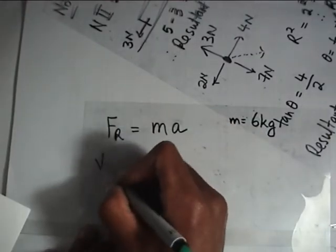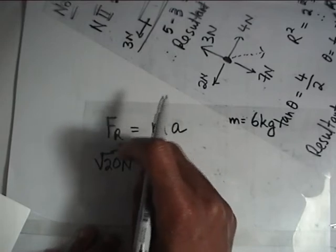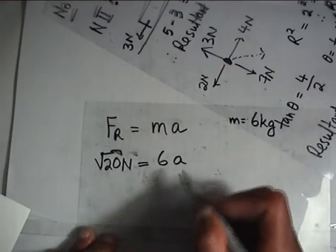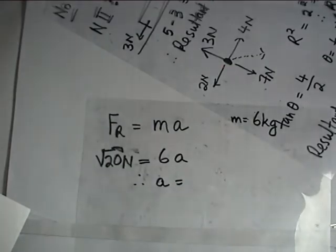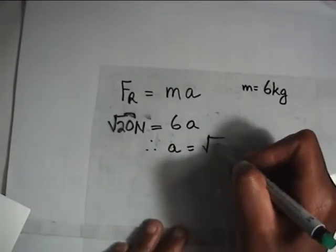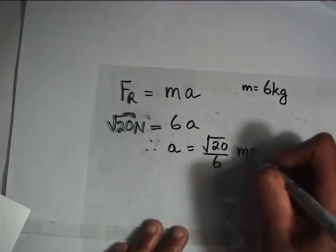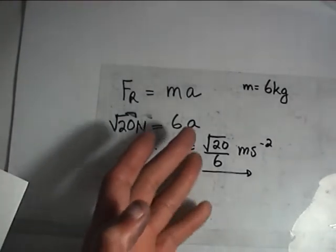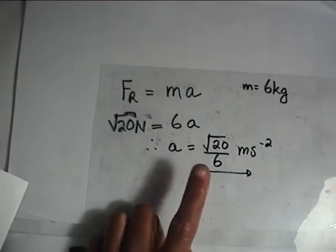That resultant of root 20 newtons is what we put into our formula. So: resultant force of root 20 newtons equals mass, which is 6, times acceleration. The acceleration will be root 20 over 6 meters per second squared. When all those forces create that resultant force of root 20 newtons, the acceleration will be A = root 20 over 6 m/s².